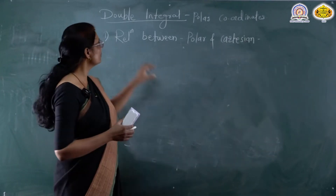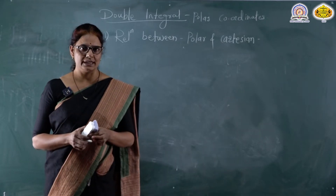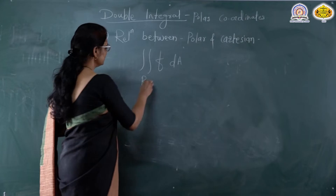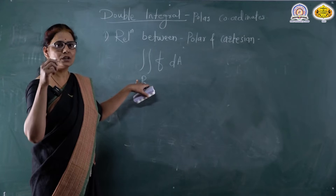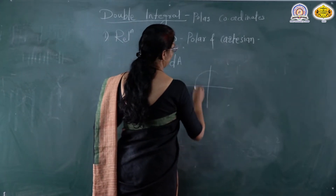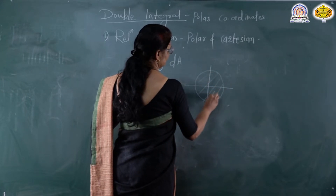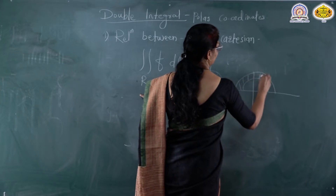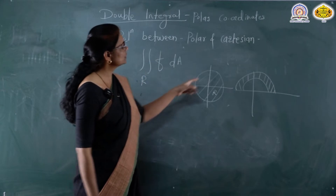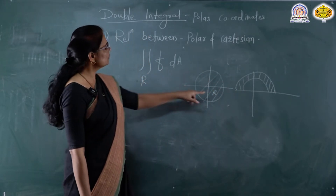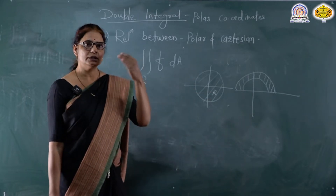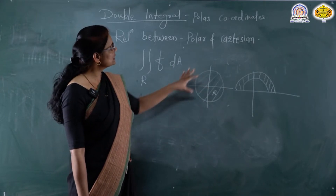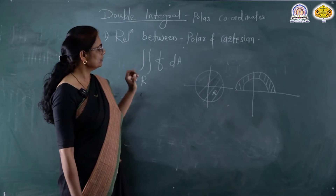When solving problems of double integrals, sometimes the problems become complicated. Especially when we want to find the double integral over a region R that is either a semicircle, a circle, or the region between two concentric circles. In such cases, the description of R is complicated in Cartesian coordinates compared to polar coordinates. In polar coordinates, R is easily described and it is easier to calculate the double integral.